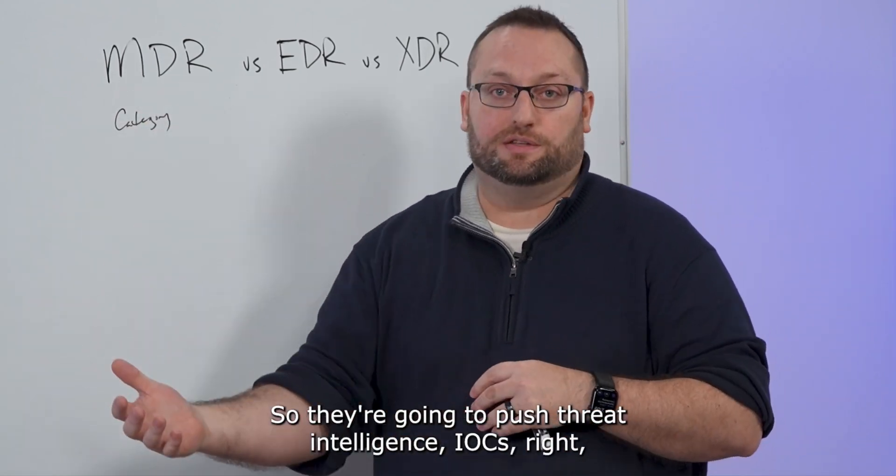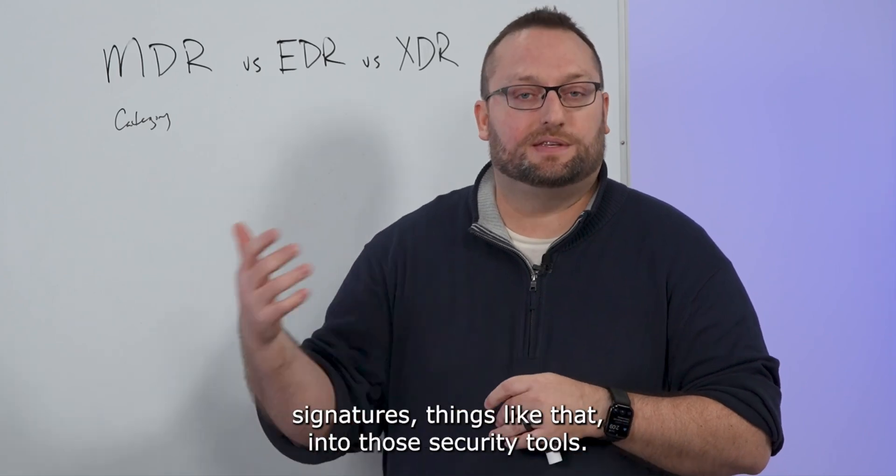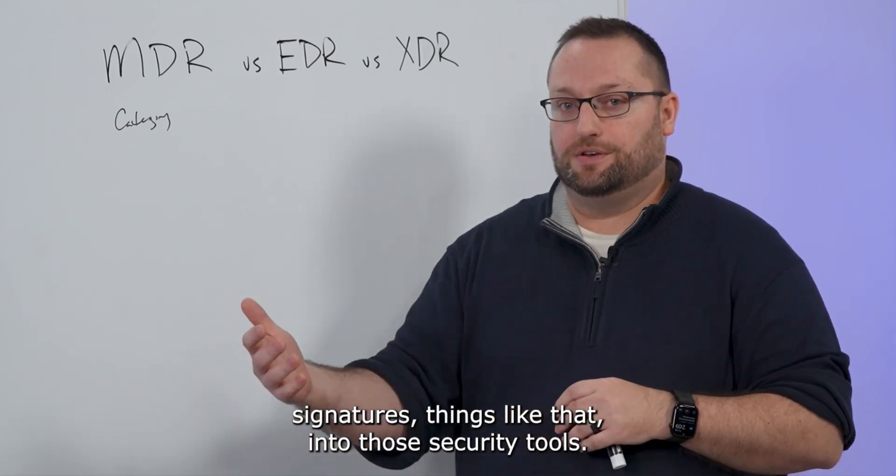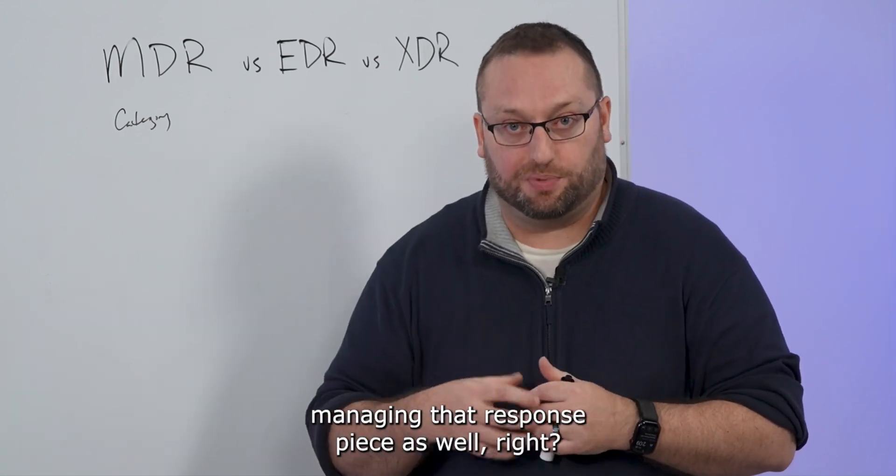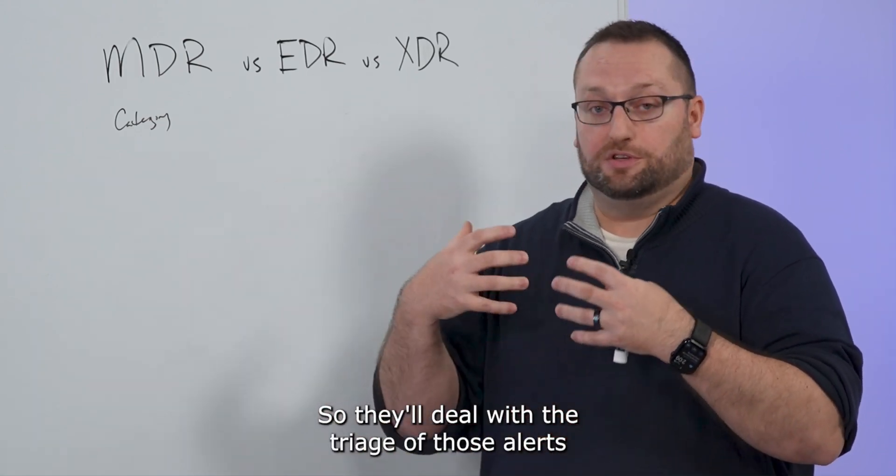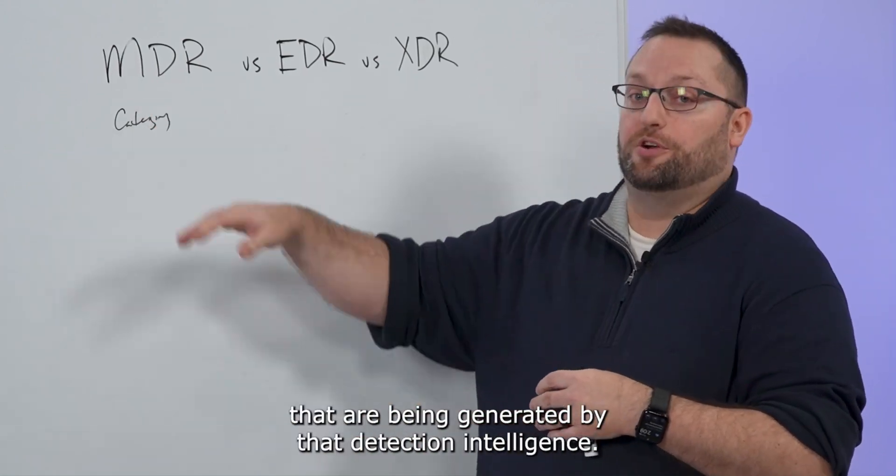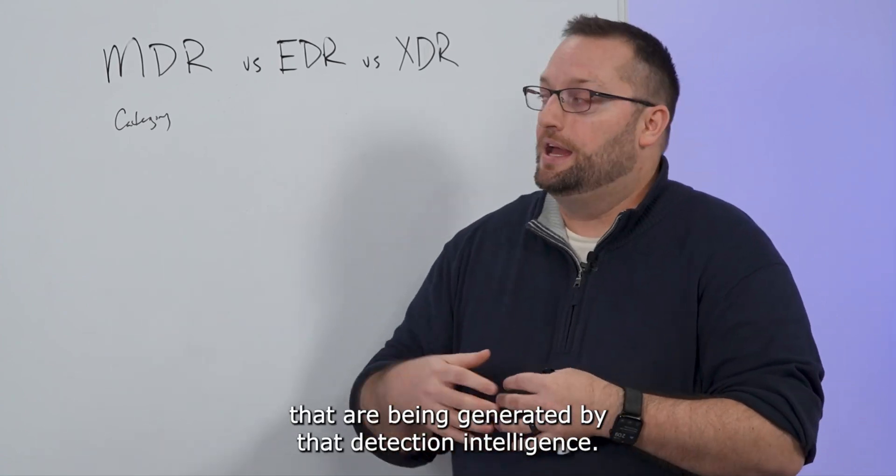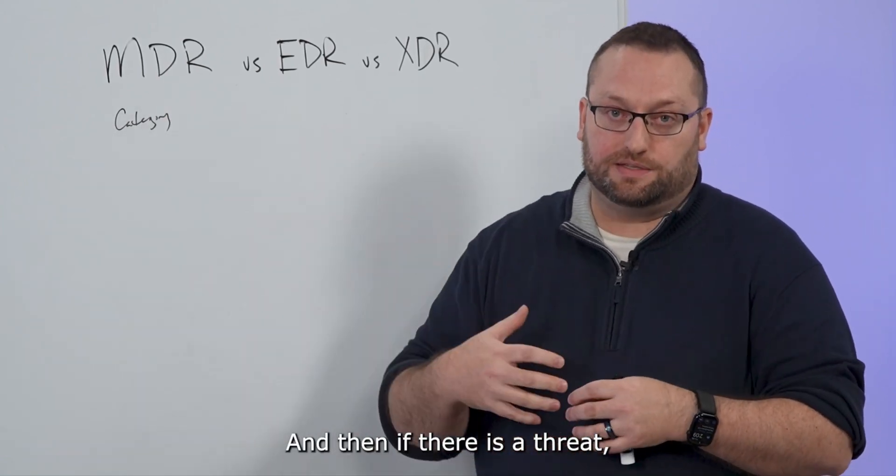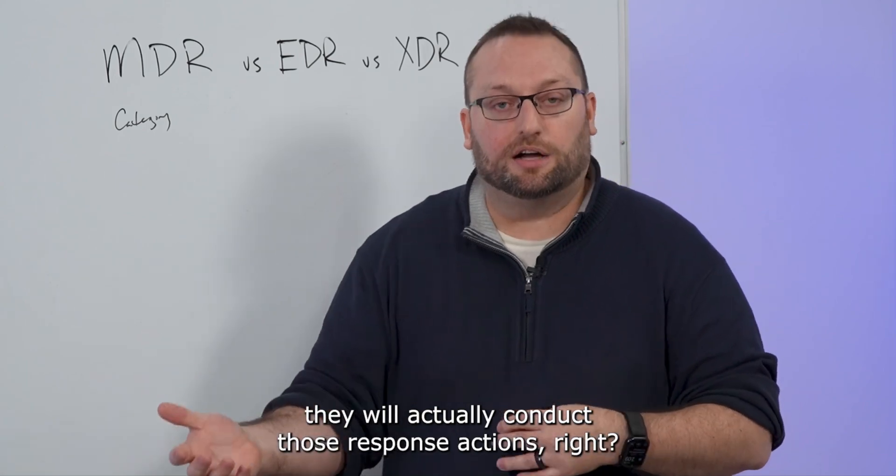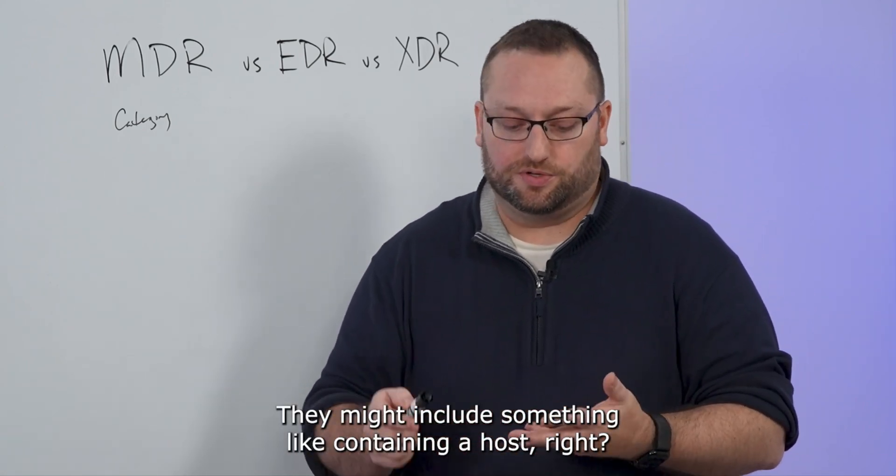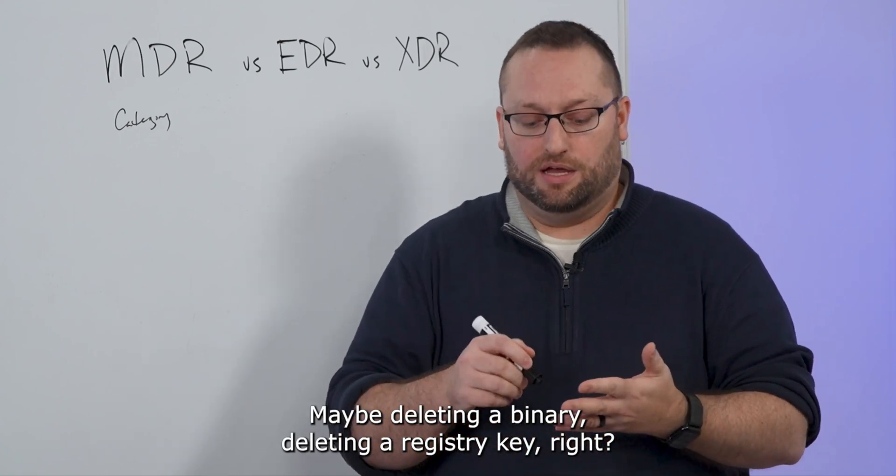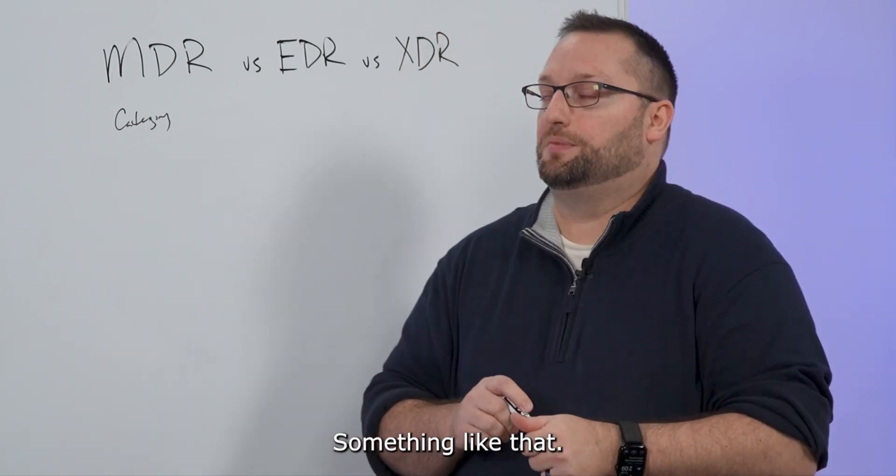And so this category of vendors that are in the MDR space are essentially signing up to manage that detection piece. So they're going to push threat intelligence, IOCs, signatures, things like that into those security tools. And then the R is, of course, managing that response piece as well. So they'll deal with the triage of those alerts that are being generated by that detection intelligence.